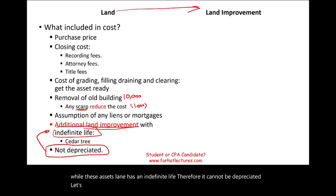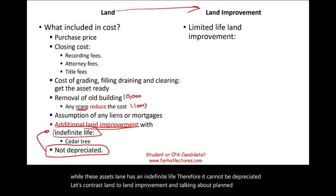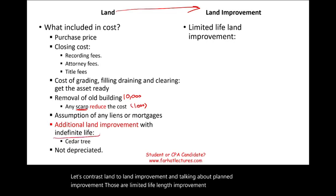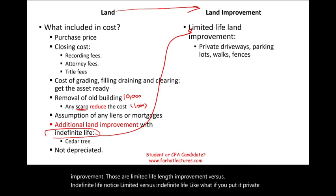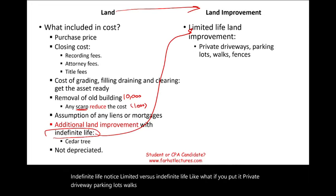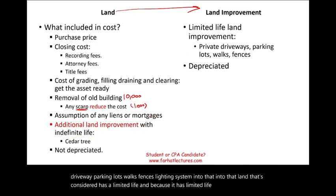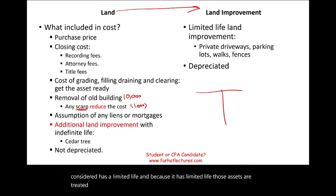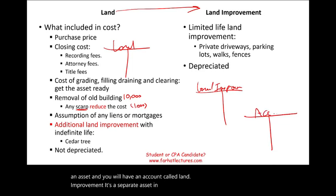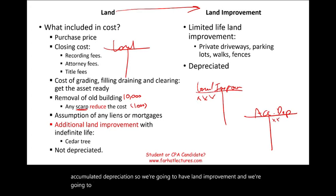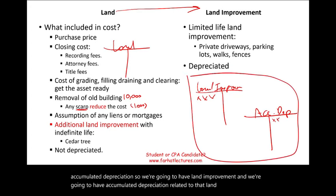Let's contrast land with land improvements that have a limited life — such as private driveways, parking lots, walks, fences, and lighting systems. Because these have a limited life, they are treated separately. You will have a land account and a separate land improvement account, and land improvement will have its own accumulated depreciation — unlike land, which is not depreciable.